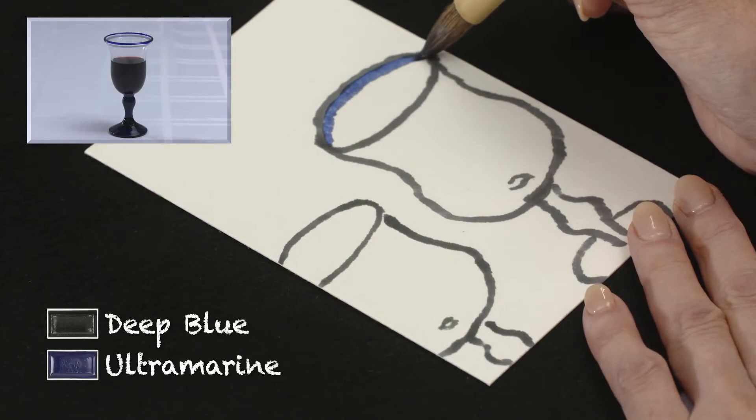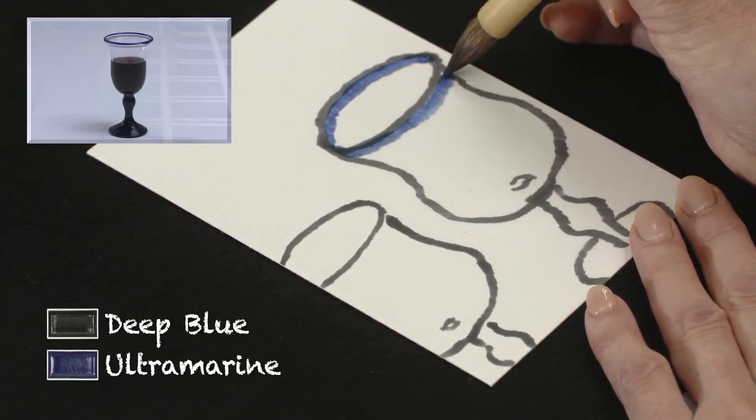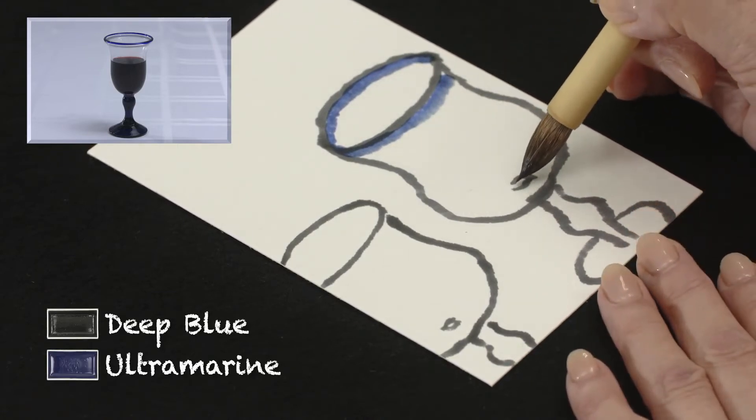Using a very wet gradient brush, mix some deep blue with ultramarine to color the top of the glass, the stem, and the base.